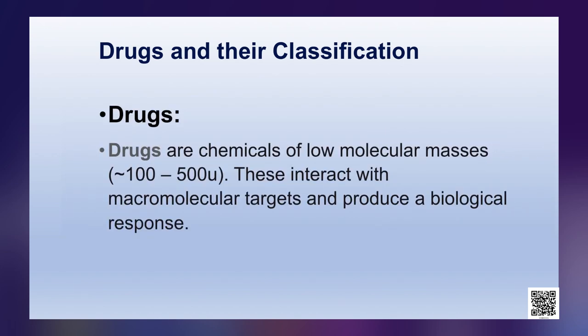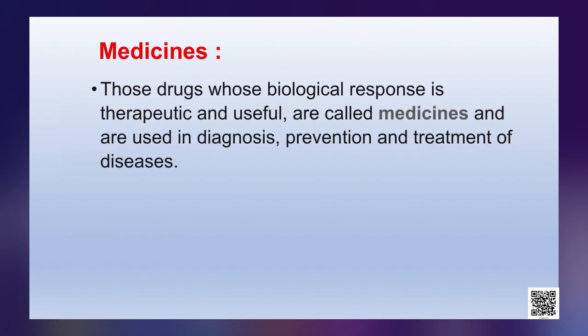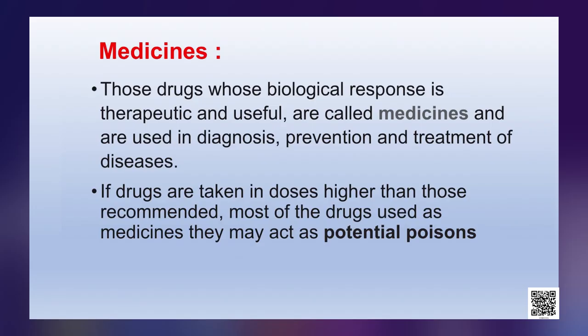Drugs are chemicals of low molecular masses, approximately 100 to 500 units. These interact with macromolecular targets and produce a biological response. In other words: drug plus molecular target equals biological response. Those drugs whose biological response is therapeutic and useful are called medicines, and these are used in diagnosis, prevention and treatment of diseases.